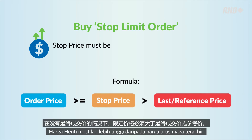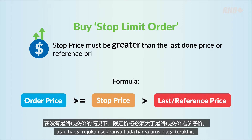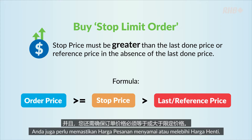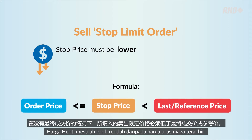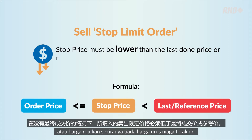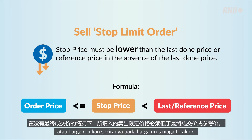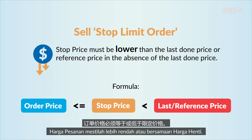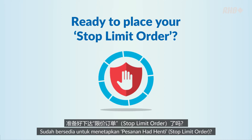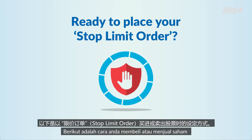It limits potential losses and protects gains — no more worrying about runaway prices. For a buy stop limit order, the stock price must be greater than the last done price or reference price. The order price must be equal to or greater than the stock price. For a sell stop limit order, the stock price must be lower than the last done price or reference price, and the order price must be lower than or equal to the stop price.